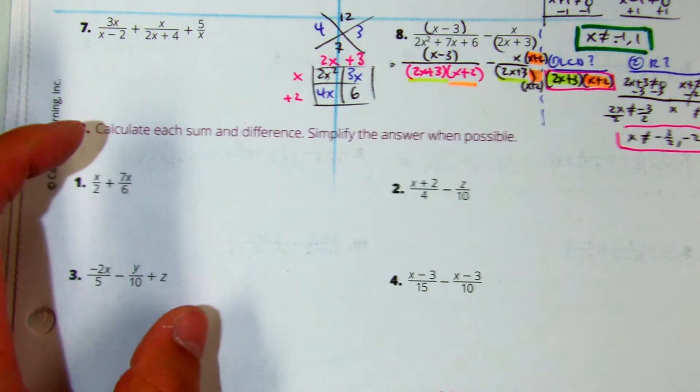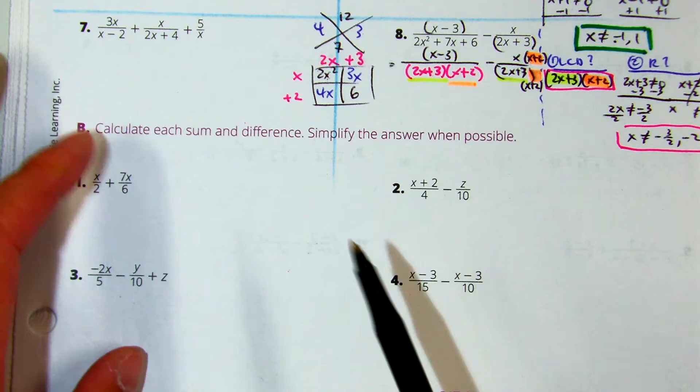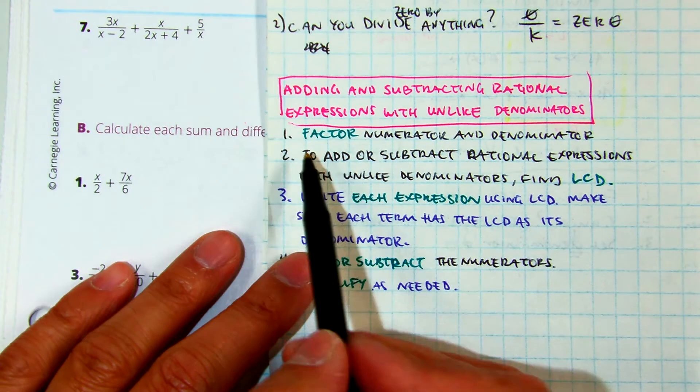In number 2 now, we're actually going to calculate the sum and difference. Well, how do I do that? First thing I'm going to do is I'm going to make sure I factor.